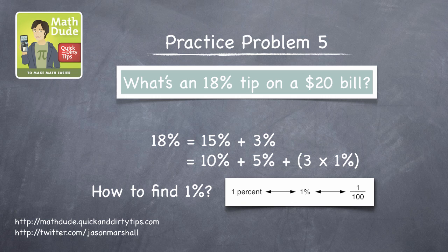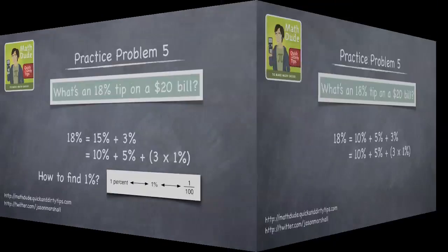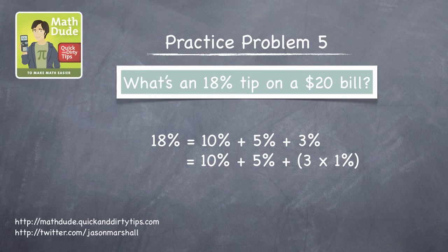That's the same as moving the decimal point two places to the left instead of 1. So if 10% of $20 is $2, 1% of $20 is $0.20. And once you've got that, finding 18% is easy. You should get $3.60.